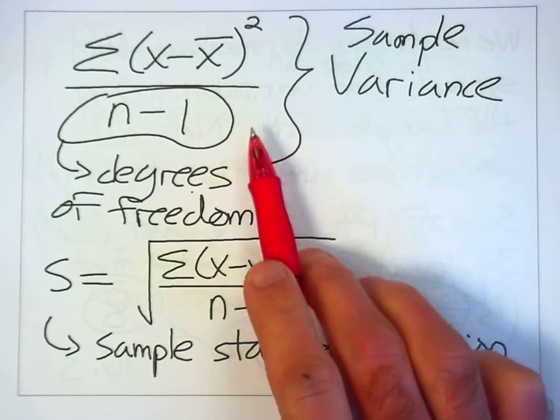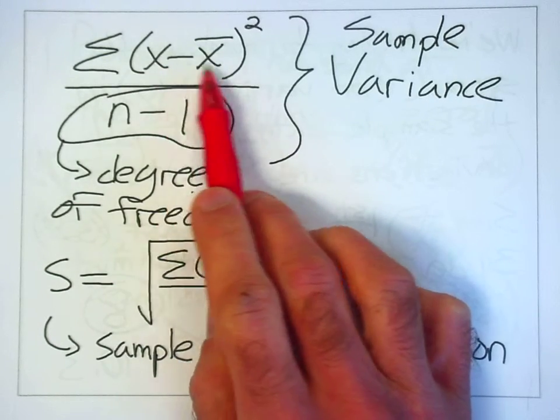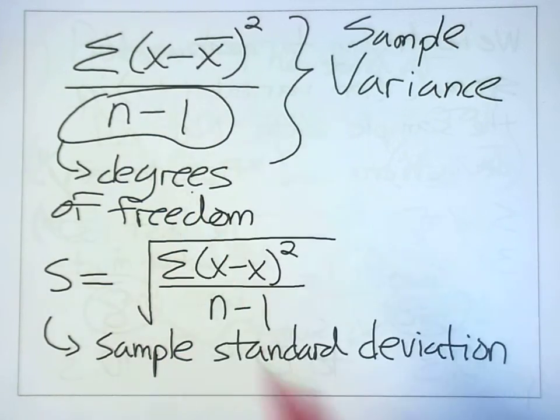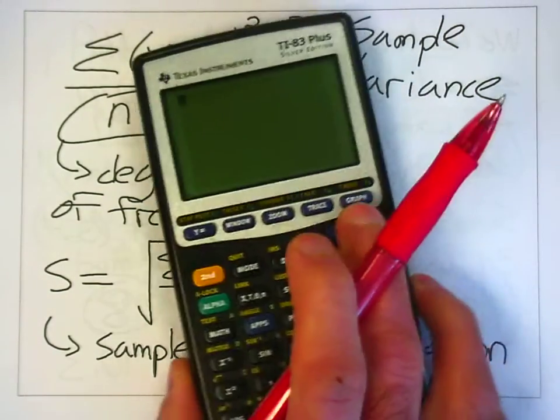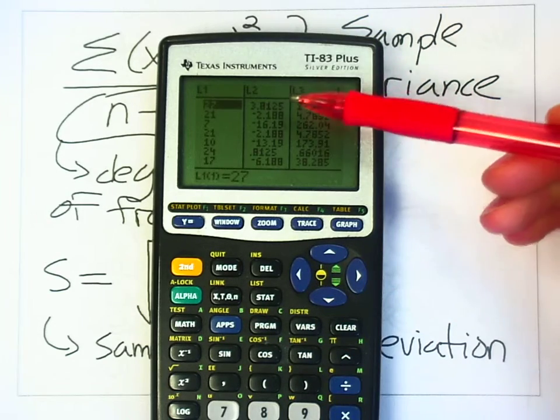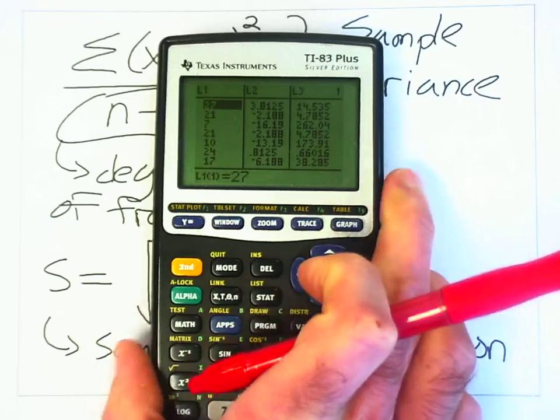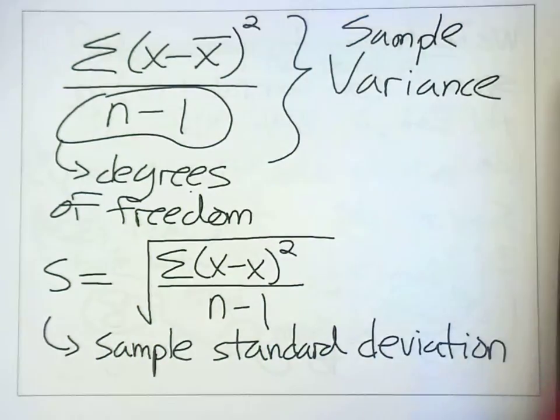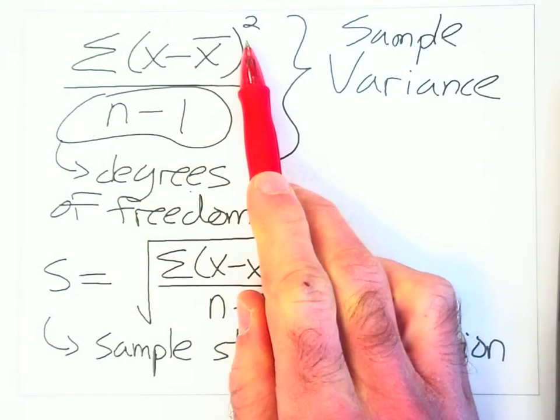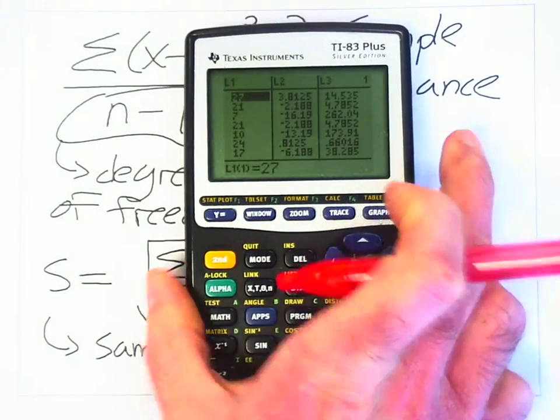So to review, where we left off, we had calculated deviations, x minus x bar or x minus the mean. Those are the deviations. We calculated those deviations in list 2. So that the negatives and positives don't cancel one another out, we squared those deviations. Those squared values were in list 3.